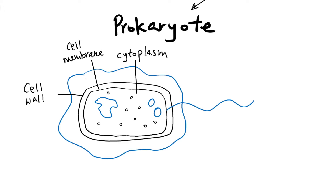We also have these little dots called ribosomes. A common misconception is that people think prokaryotic cells are so simplistic that they don't need ribosomes, but in fact they do have a smaller ribosome. Ribosomes are where protein synthesis takes place — they make the proteins. These four organelles are found in prokaryotic cells and are also quite common in eukaryotic cells.